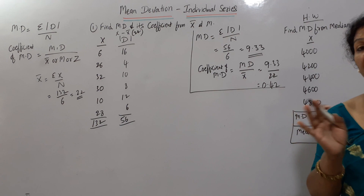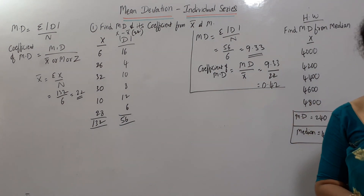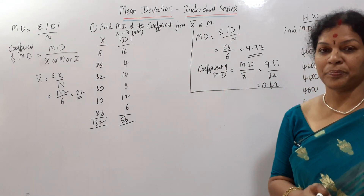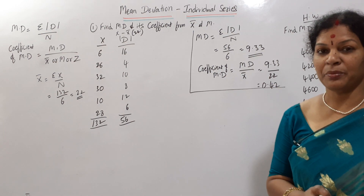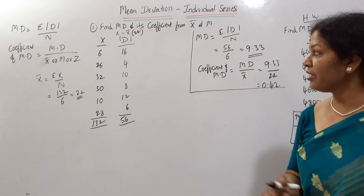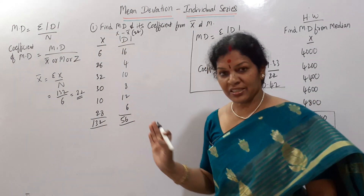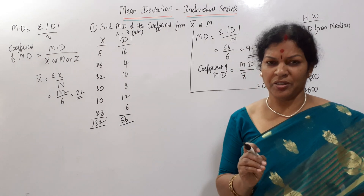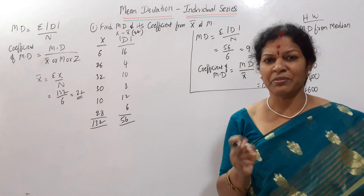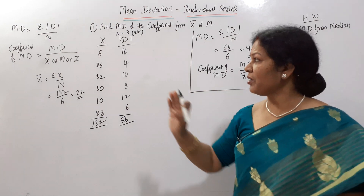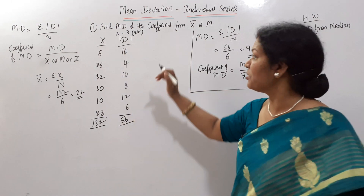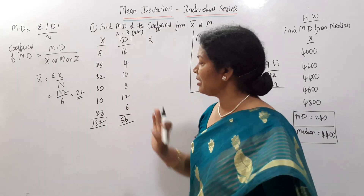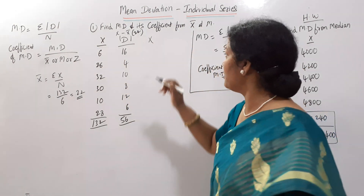Next, mean deviation from median. We need to calculate the median. To calculate the median, we always have to arrange X in ascending order. If it is already given in ascending order, no problem; otherwise we rearrange it. The data is not in ascending order, so we are rearranging it.